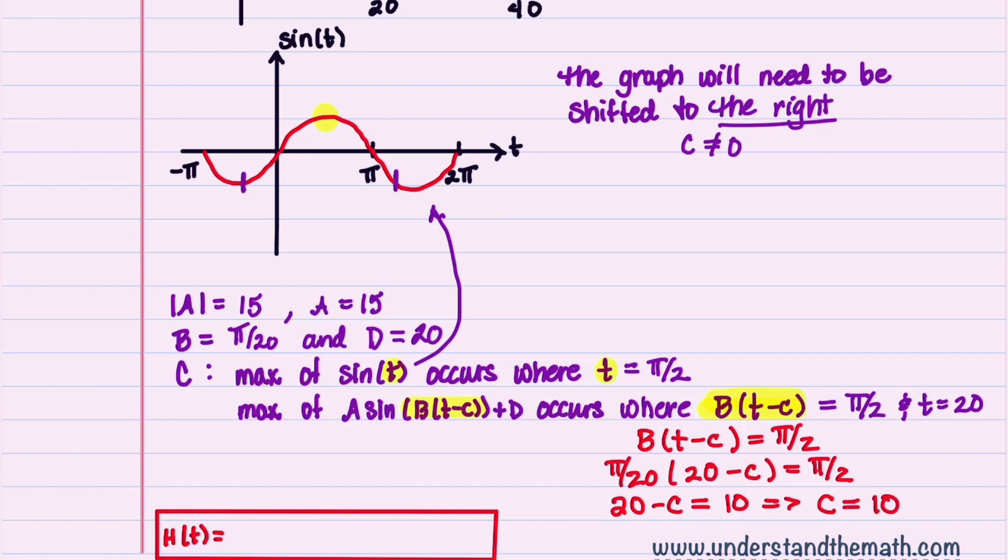Let's now put this all together. Our h of t will be 20, which is our D, plus our A, which is 15, times sine times our B, which is π over 20, times our t minus 10.